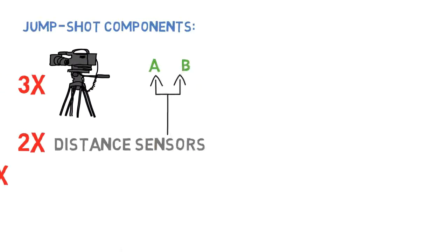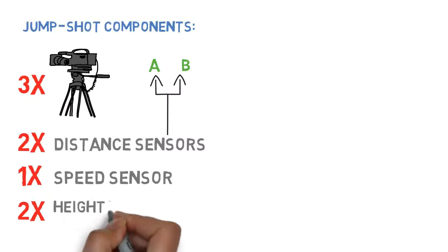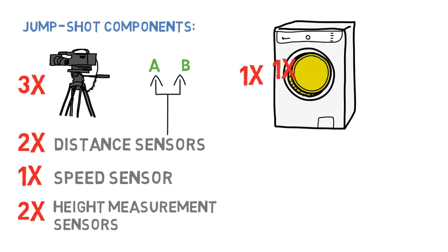JumpShot components. The technology is made up of three cameras, two distance sensors take A and B, a speed sensor, two height measurement sensors, a coin time machine, and a monitor.